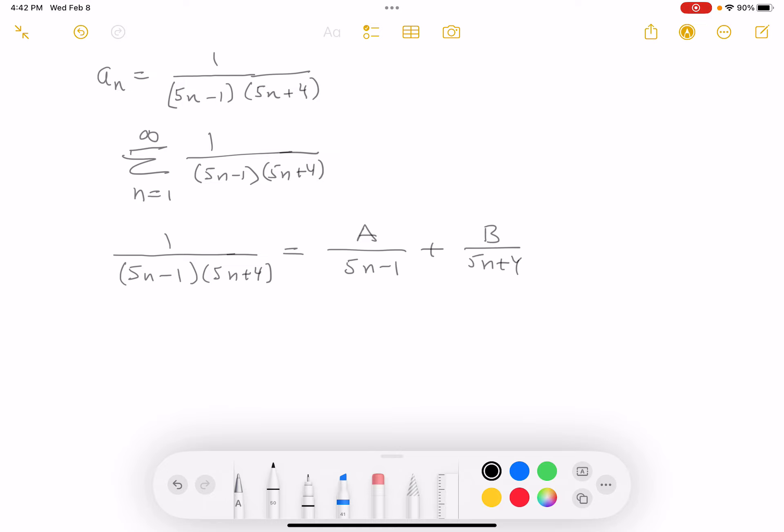I'm going to say A over five N minus one plus B over five N plus four. I'm going to clear the fraction by multiplying both sides by the LCD. I would get one. Then I'd get A times five N plus four. And then I get B times five N minus one. And I'm going to just pick some arbitrary numbers that are easy for me to compute with. I'm going to pick N to be zero because it's a really easy number. And what do you get? You get one equals, well, that would be four A. If N is zero, you get minus, let's see what you get, if zero. So four A, I get minus B, right?